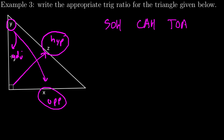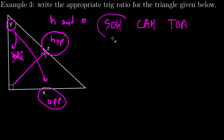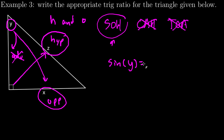I have no markings on the adjacent side — I don't have given or missing information there — so I'm not going to use the adjacent. I am looking for H and O. SOH has both H and O; CAH only had H, not O; TOA only had O, not H. So my correct trig ratio will be sine of angle Y equals opposite over hypotenuse, which is X over Z.